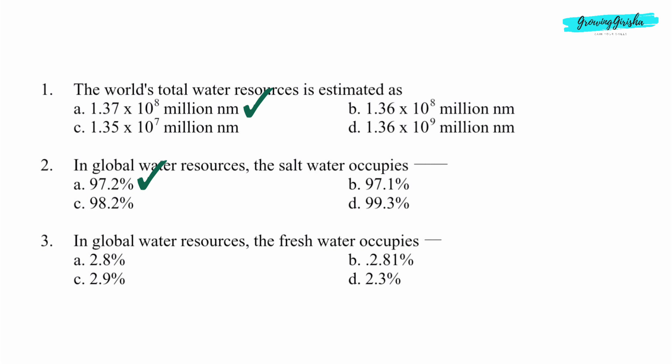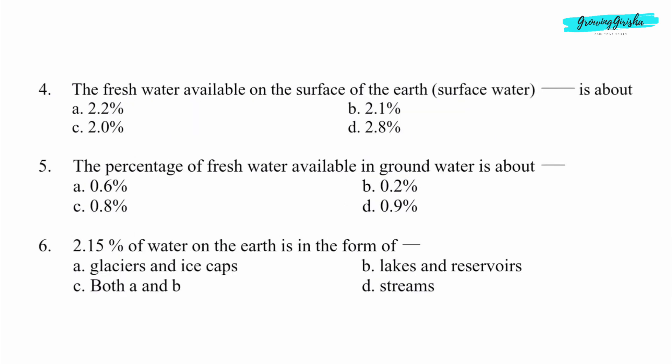Question 3. In global water resources, the fresh water occupies dash. Option A: 2.8%.